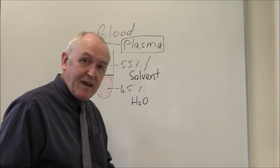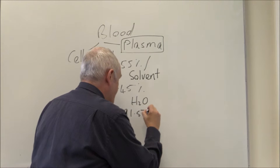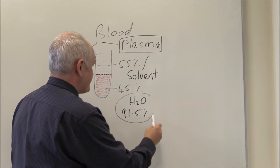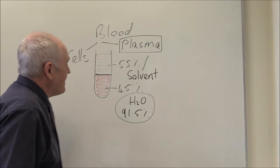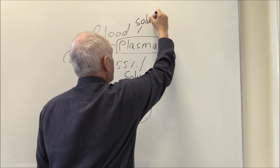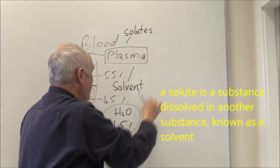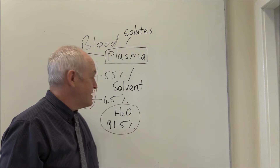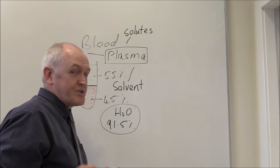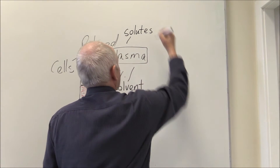If we just take the plasma without the cells, then about 91.5% of the plasma is going to be water - that is the solvent. The other part is going to be the solutes, which are the materials dissolved in the solvent, that is in the water. So we want to think about these solutes, the components of the plasma.